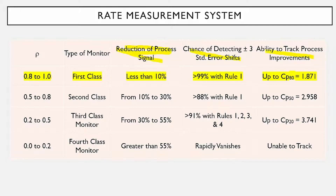As you improve your process but don't change your measurement system, you're going to increase how much variation the measurement system contributes. This is a first class monitor. There's a lot more on how to interpret this rating system in Dr. Wheeler's book, as well as on our website.